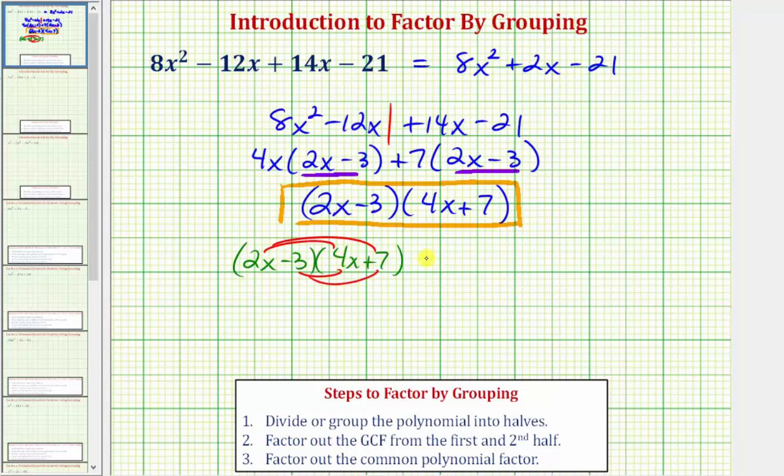We'd have 2x times 4x, that's 8x². And then 2x times 7, that's 14x, so plus 14x.